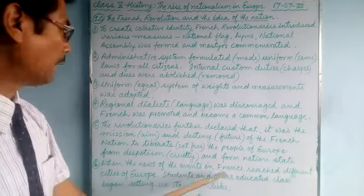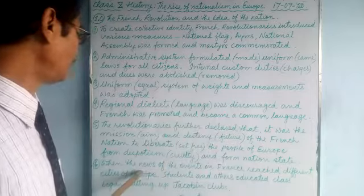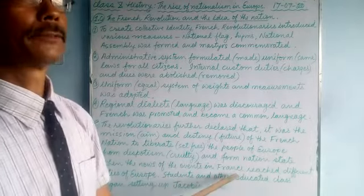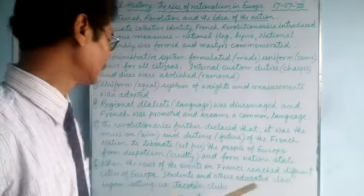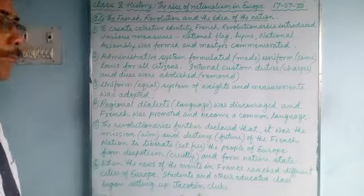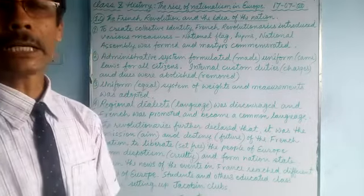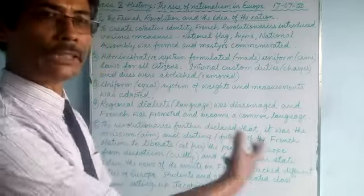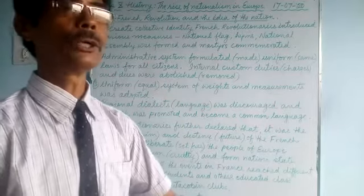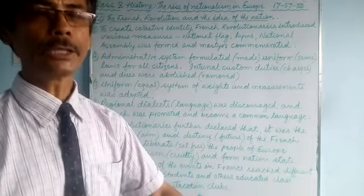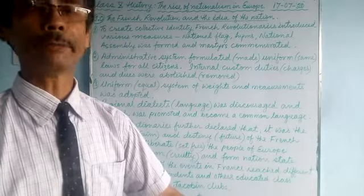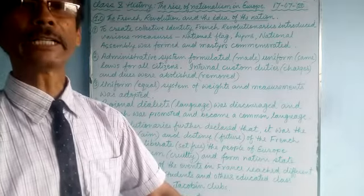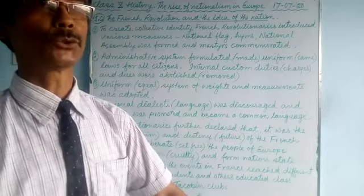When the news of events in France spread to different cities of Europe, students and other educated people began setting up Jacobin clubs in other European countries as well. Not only in France, but across Europe, students and the educated class started forming Jacobin clubs to begin their struggle against despotic kings and liberate their countries.